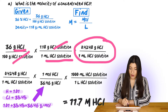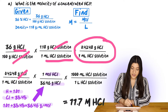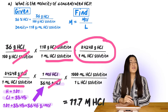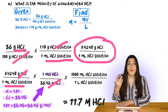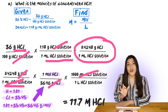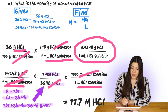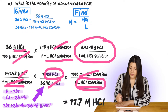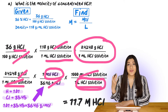I'll put grams on the bottom and moles on top since we're finding moles. The grams of HCl cancel, giving us moles of HCl on top and milliliters on the bottom. Next we convert milliliters to liters using 1000 milliliters on top so units cancel, placing liters of HCl solution on the bottom. We finally have moles of HCl divided by liters of HCl solution, and our final answer is 11.7 M HCl.